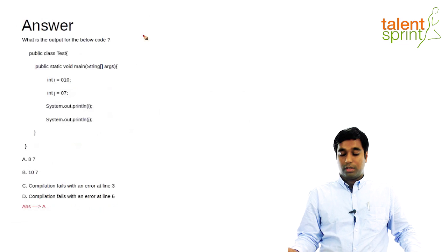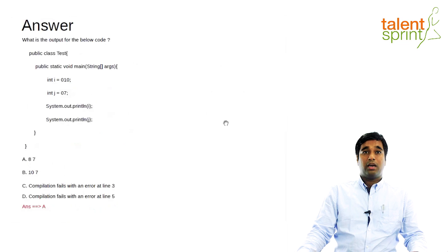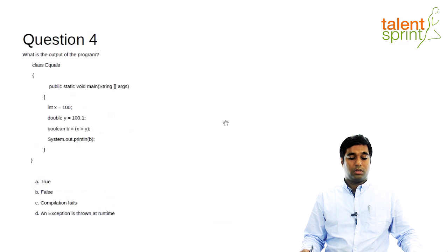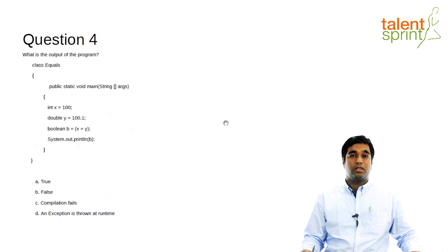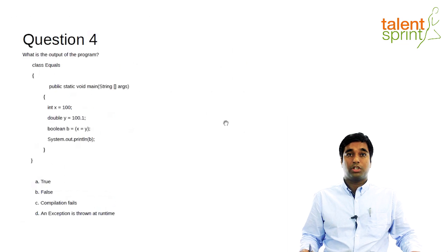Now I will move on to the next question. Pramod, I see you gave the right answer after seeing the tip. Here's question number four. This is another program — have a look at it and try to guess the answer. We are actually dealing with Java coding output related questions asked in AMCAT. We have done three questions already, so we are on question number four.